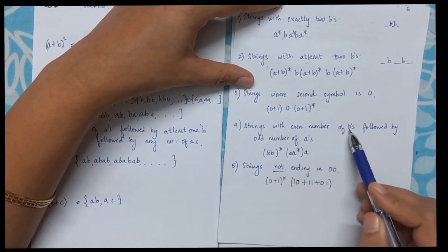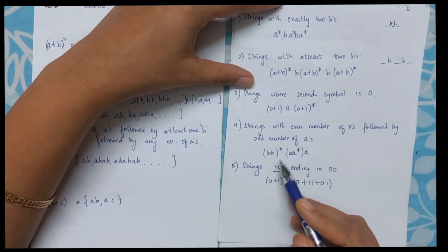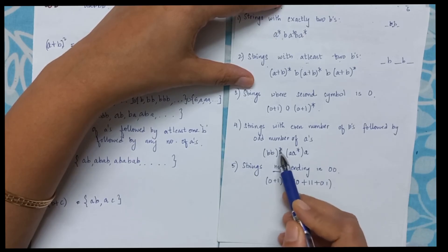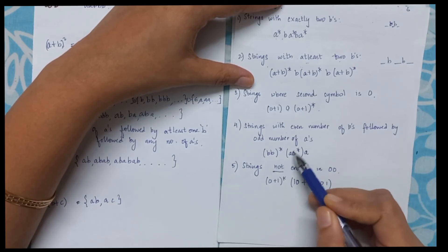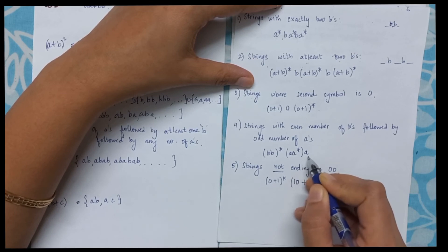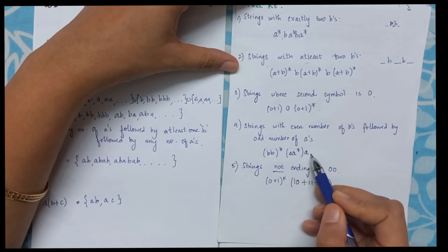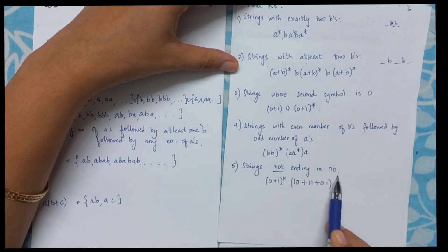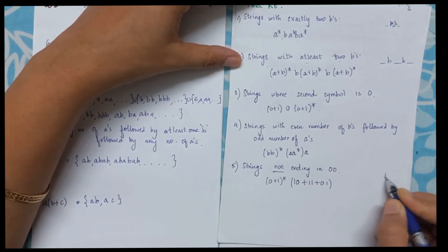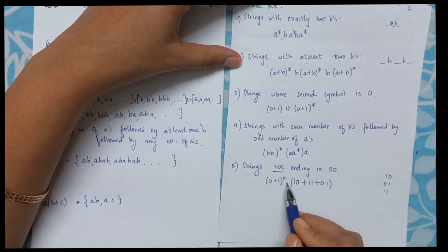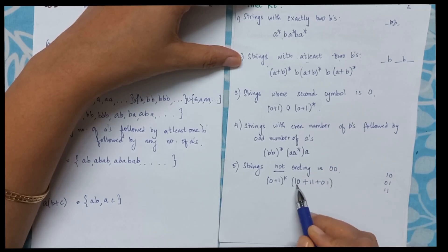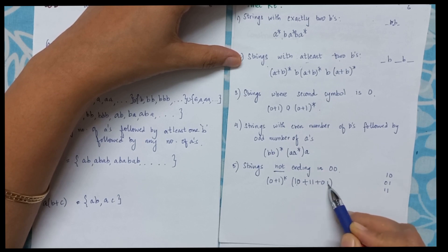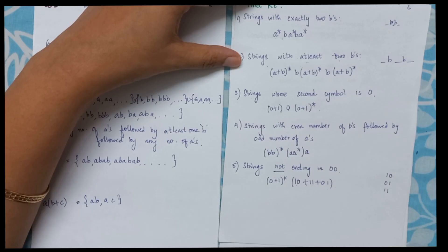For strings with an even number of b's followed by an odd number of a's: (bb)* gives even number of b's, and aa*·a gives odd number of a's — if it is three then I will have aa and then one more a. For strings not ending in 00, I have three options for the ending: 01, 10, or 11. So it will be (0+1)*·(01+10+11), where the plus sign indicates union and (0+1)* indicates anything before.